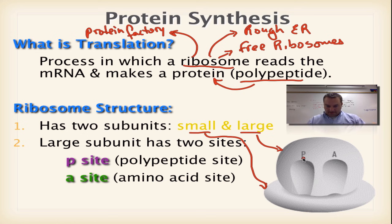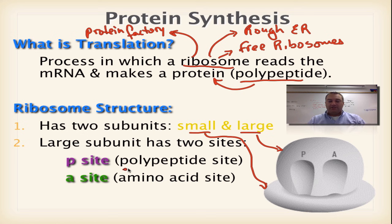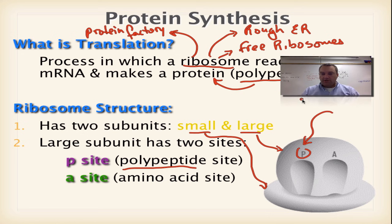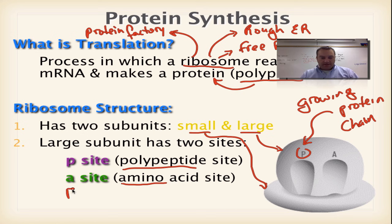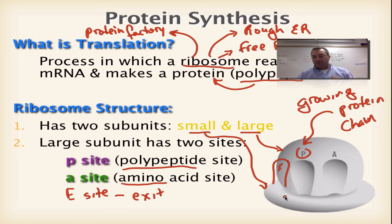There are two main sites. In your textbook, and maybe in others, you're going to get a third site called the E site. The P site — the P stands for polypeptide — is this area right here, and what happens in the P site is we're going to have the growing polypeptide or protein chain. In the A site, the A stands for amino acid, and that's where a tRNA is going to come in carrying just an amino acid. That third site is called the E site; the E stands for exit. For our purposes, we're going to keep it simple and just deal with a P site and an A site.